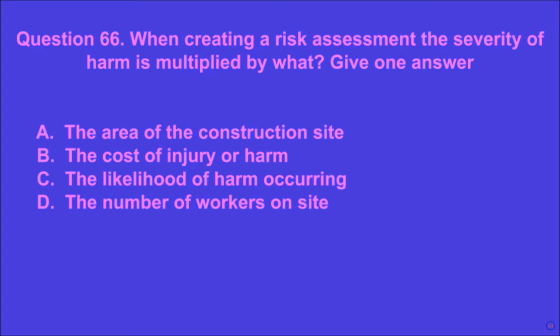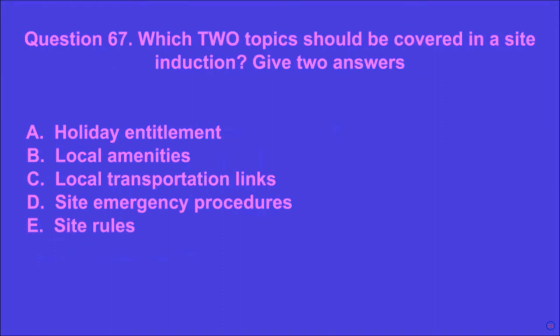Question 66: When creating a risk assessment, the severity of harm is multiplied by what? Give one answer. A: the area of the construction site, B: the cost of injury or harm, C: the likelihood of harm occurring, D: the number of workers on site. C is the correct answer.